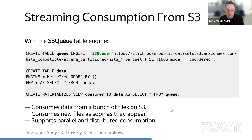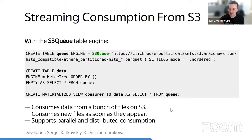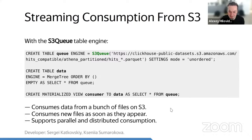In ordered mode, it tracks the maximum processed file name and processes only files greater than the latest — useful if files contain a timestamp in their name. In unordered mode, it tracks the whole set of processed files regardless of size. This feature is very fresh and experimental. It will be included in today's release 23.8, and my colleagues are preparing patches so it will be production ready — hopefully before midnight.